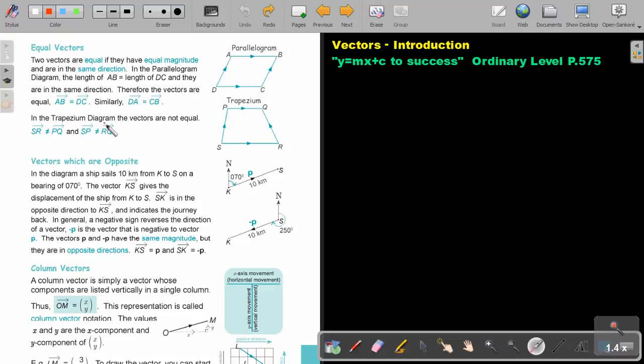In the trapezium diagram, the vectors are not equal. Can you see? PQ is not equal to SR because the magnitudes are different. The directions are equal, but if the magnitudes differ, we say they are not equal vectors. The same. The magnitudes are different, so the directions are equal, but due to the magnitudes, they are not equal.